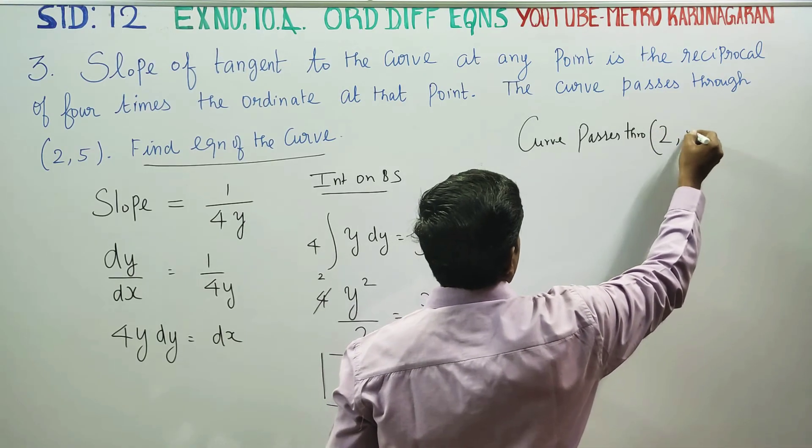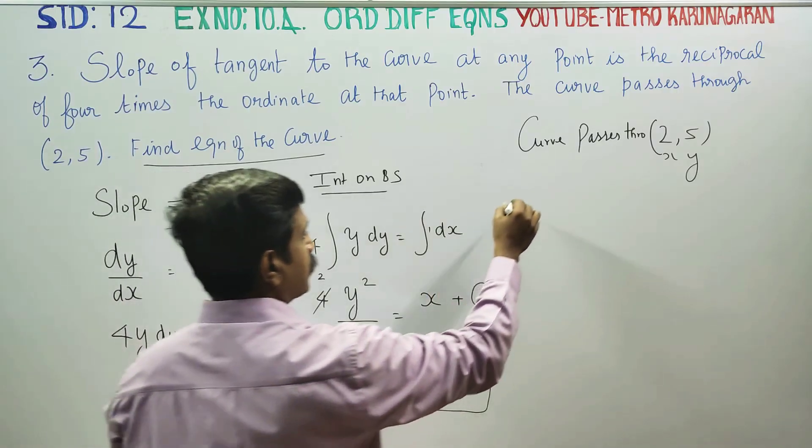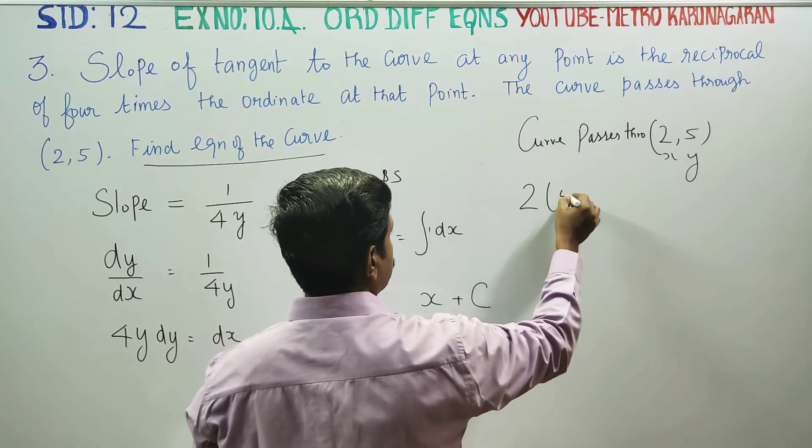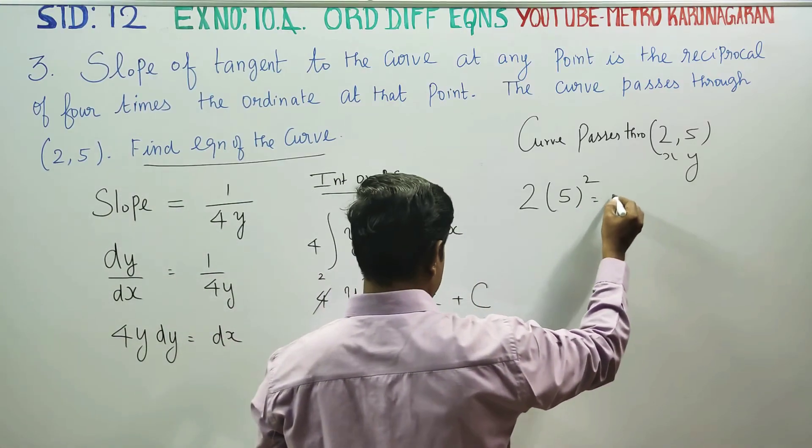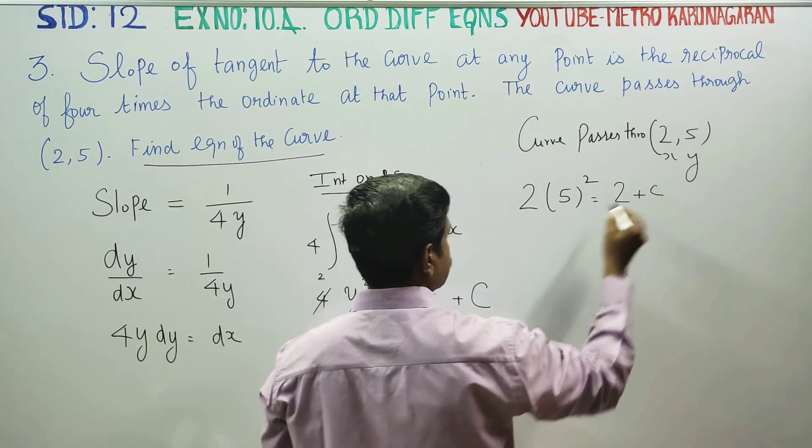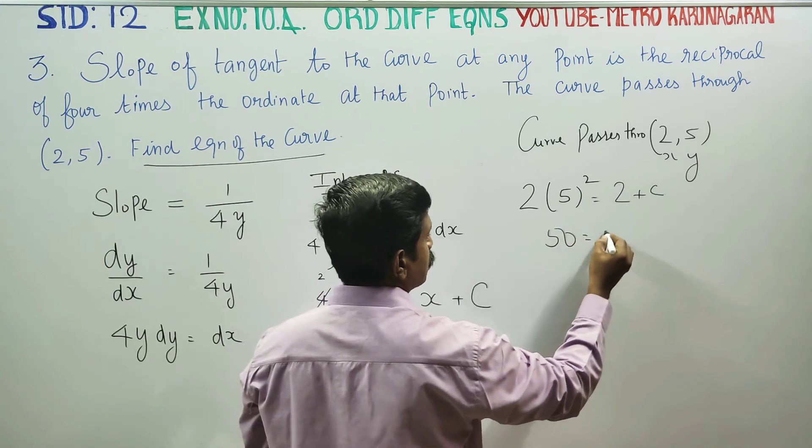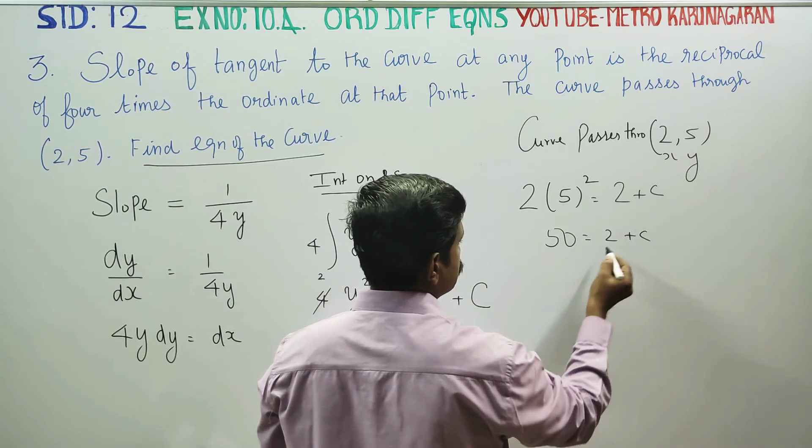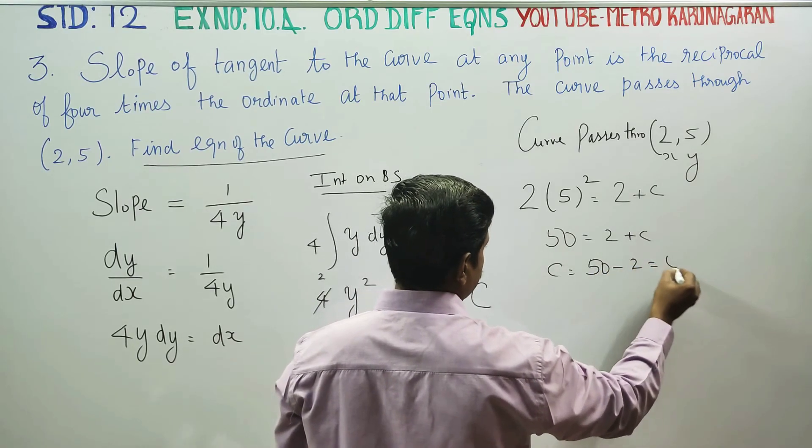We substitute x = 2 and y = 5. 2 into y square, 2 into 5 square is equal to x which is 2 plus c. This is 25, which gives 50. 50 is equal to 2 plus c. Therefore c is equal to 50 minus 2. Answer is 48.